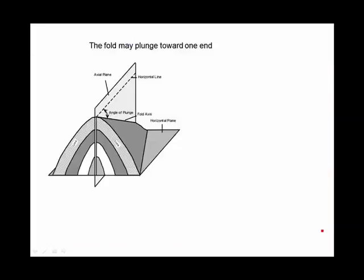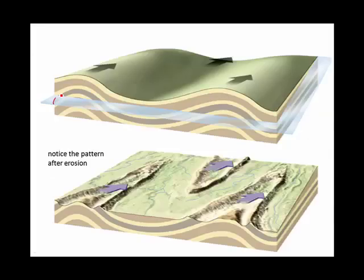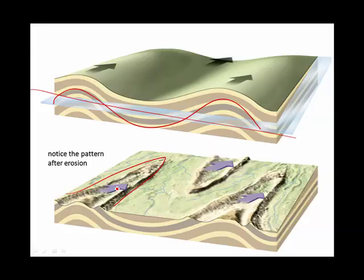Here we have a symmetrical anticline where the axis of the fold itself is plunging down away from us — we can even measure the angle of that plunge. In a block diagram you can see from the side that it's going downward, and on the geologic map you can draw in the axis of the fold showing it's an anticline, with an additional arrow showing the direction of the plunge. As anticlines and synclines are eroded away, you get a V pattern pointing either away from or toward the plunge, depending on whether it's an anticline or a syncline.